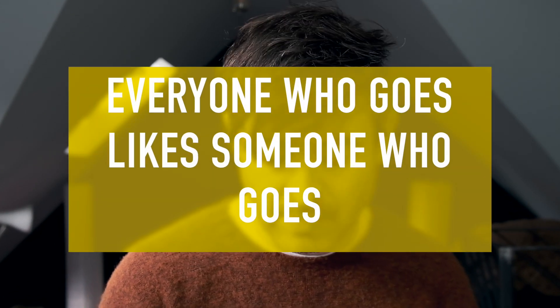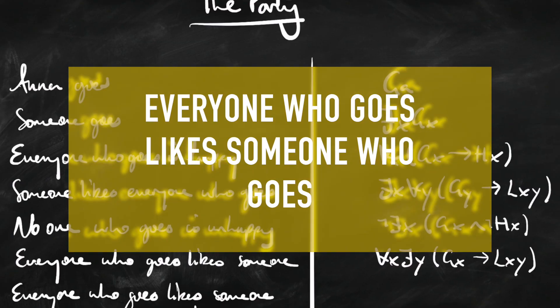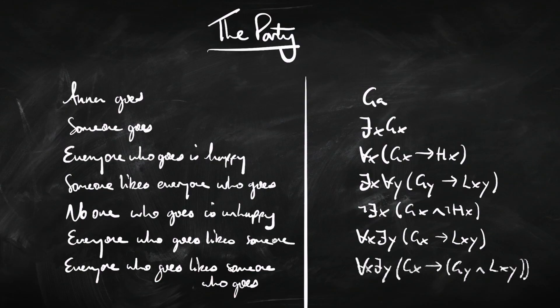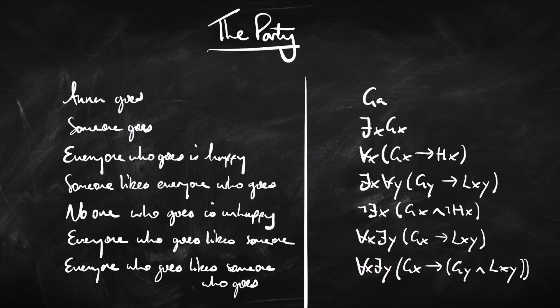'Everyone who goes to the party likes someone who goes.' This is a variation on the previous one. The previous one just says everyone who goes likes somebody or other; this one says they like somebody specifically who also goes. So it has the same format as before, but now instead of just saying X likes Y, we say Y goes to the party and X likes Y. The whole thing: for all X, if X goes to the party, then there's some Y who goes to the party and X likes Y.